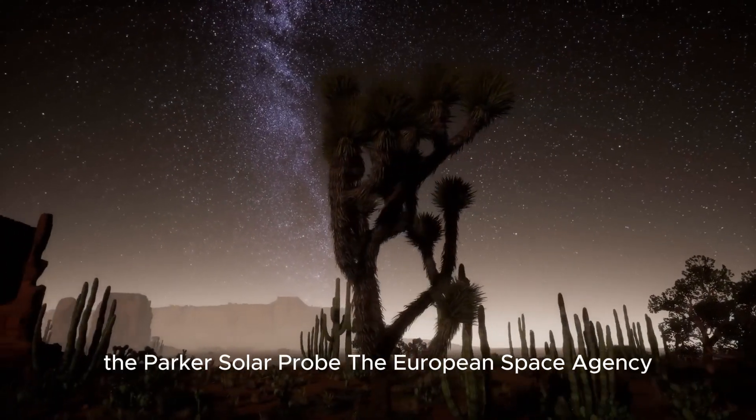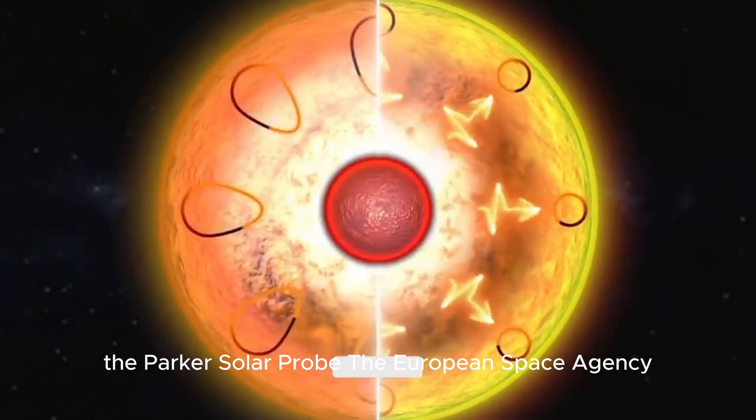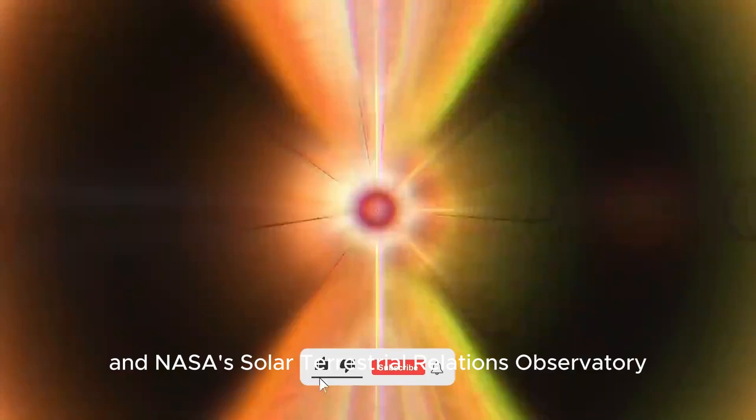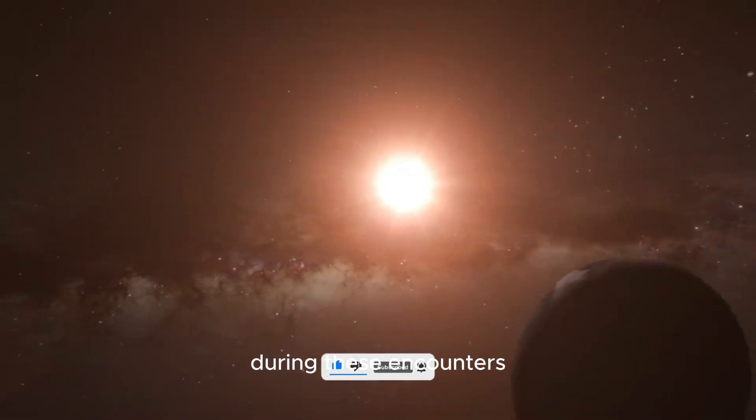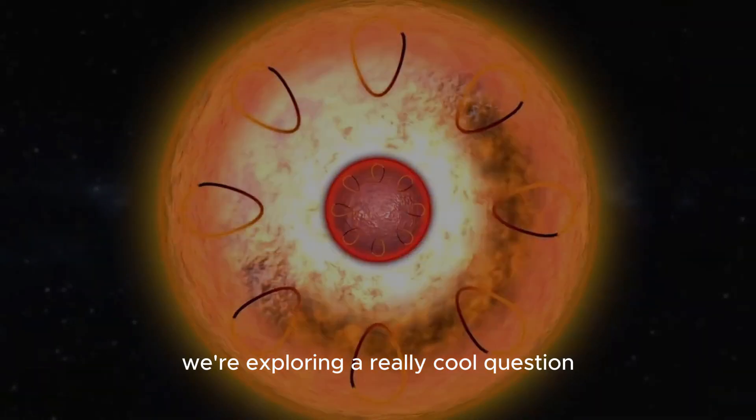To get a full picture of what's happening, other missions are working alongside the Parker Solar Probe. The European Space Agency's Solar Orbiter and NASA's Solar Terrestrial Relations Observatory are watching the sun from different angles during these encounters.